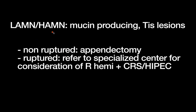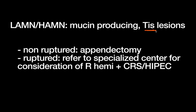Now on to the epithelial tumors of the appendix. First we have the LAMN and HAMN — low-grade appendiceal mucinous neoplasm or high-grade appendiceal mucinous neoplasm. These are TIS lesions; they don't invade past the lamina propria and are not into the submucosa, which would make them T1. They are mucin-producing, hence the M in the name. Remember, these would be adenocarcinoma of the appendix if they were deeper lesions. Since they're just TIS lesions, if these are non-ruptured, many centers would say that an appendectomy is sufficient for treatment.